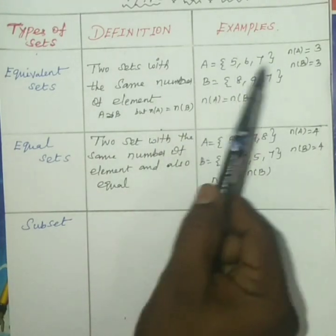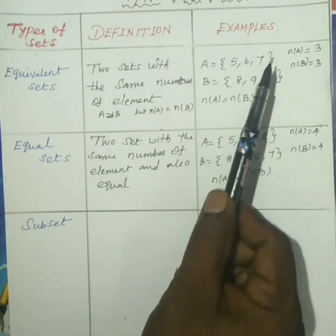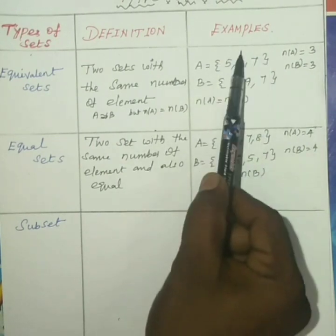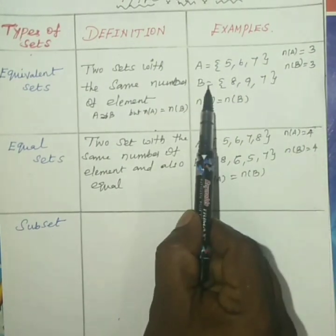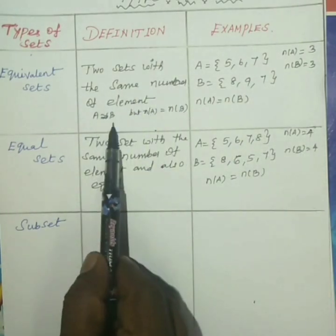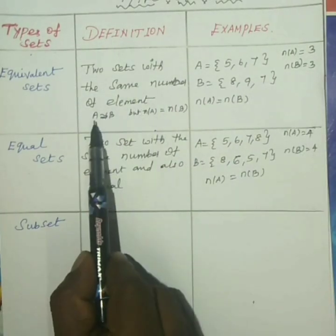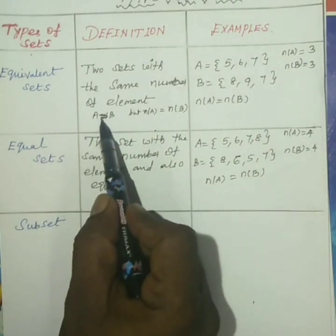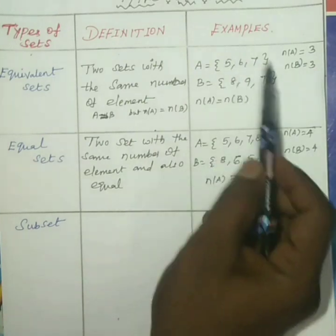The number of elements is counted - that is called the cardinal number. What is the cardinal number here? One, two, three - three is the cardinal number. Then n(A) is three, and n(B) is three. The number of elements is exactly the same, then it's an equivalent set. So number one: different elements.